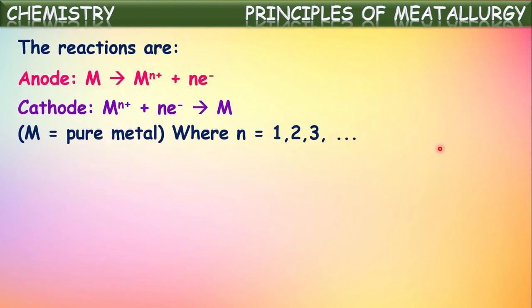We can describe the reactions at the cathode and anode as follows. At the anode, the impure metal sample is ionized into metallic ions. These metallic ions move towards the cathode. There, the metallic ions are neutralized by gaining electrons from the cathode and convert into pure metal atoms, which are deposited on the cathode. Pure metal can then be extracted from it. All remaining impurities stay at the anode, and those impurities are called anode mud.